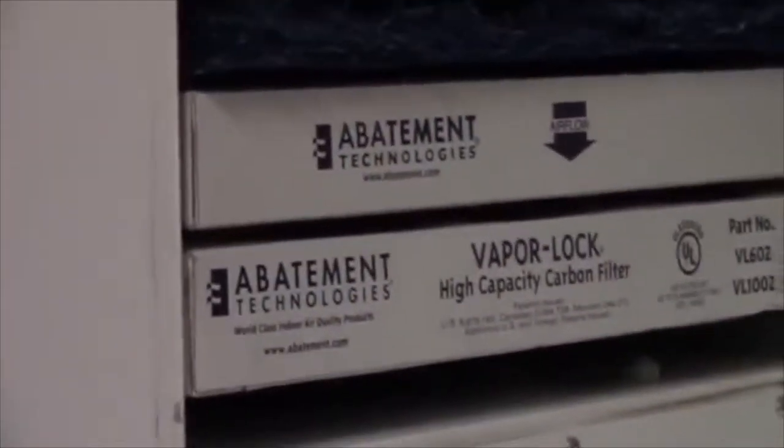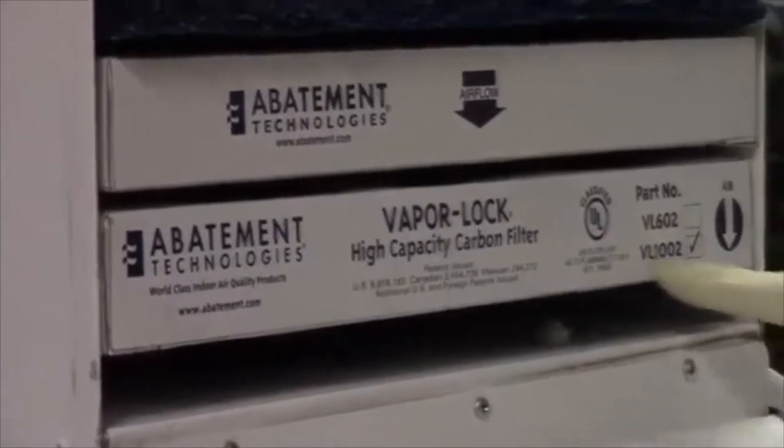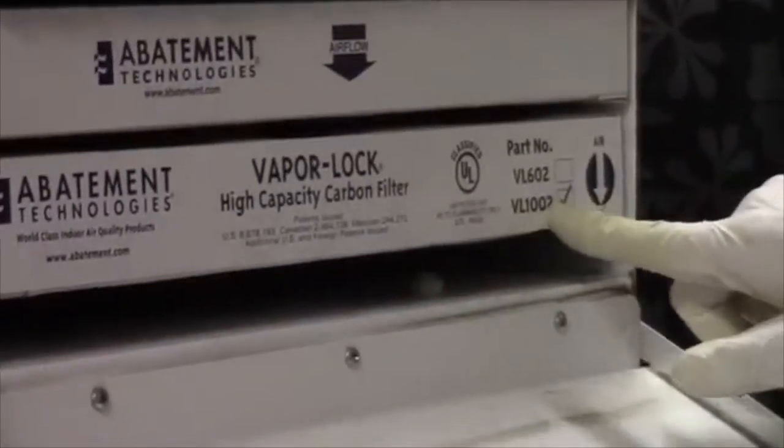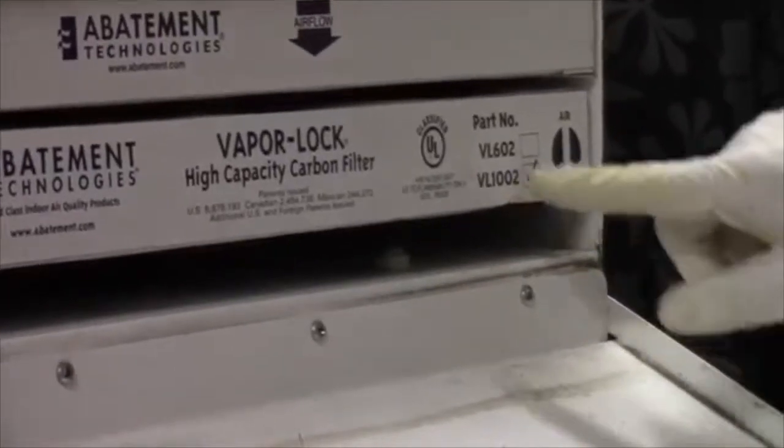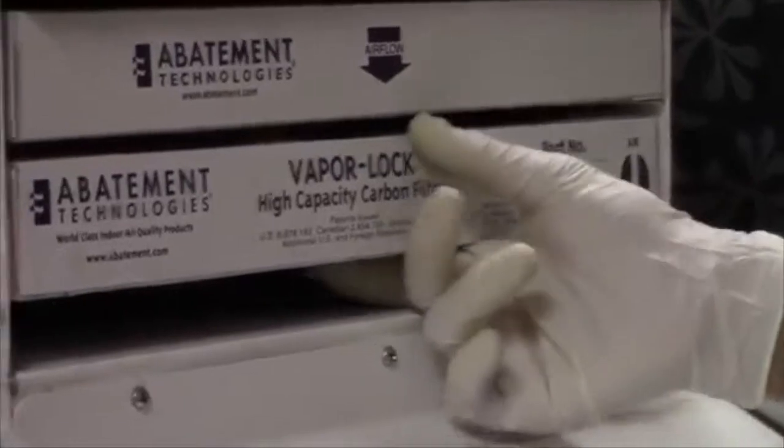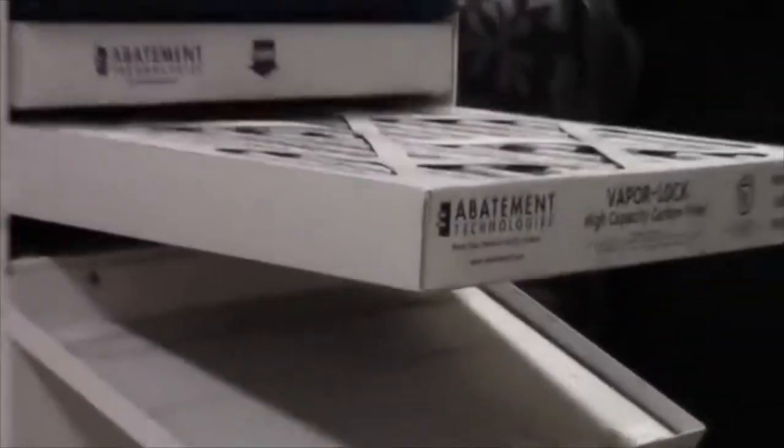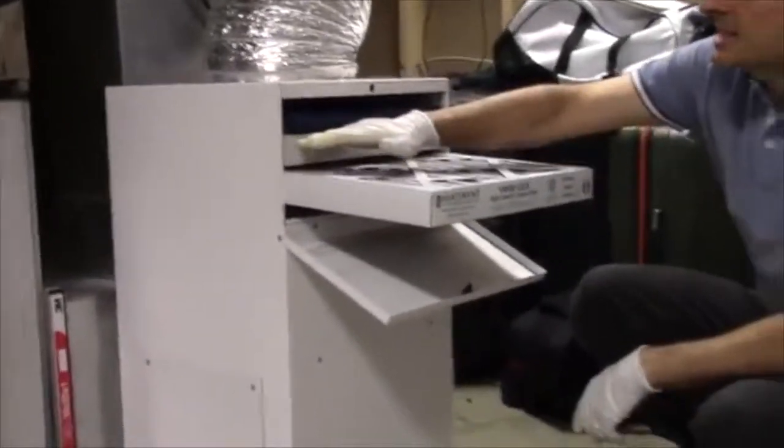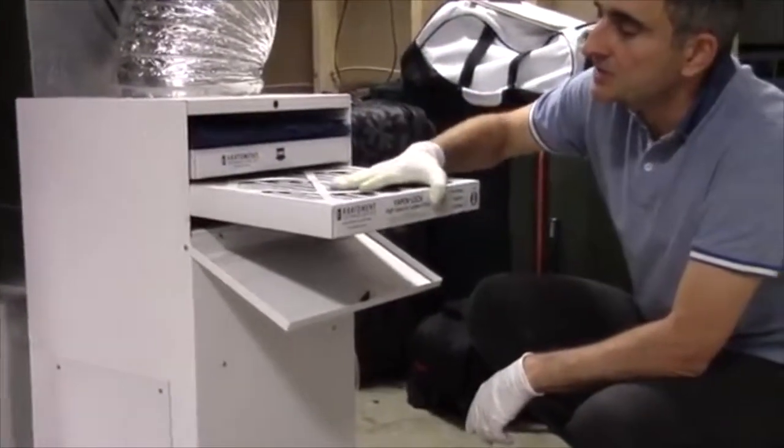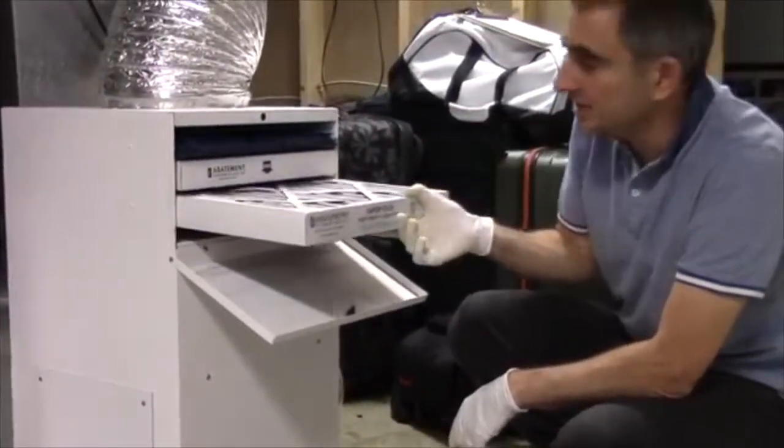In the case of the CAP 1200, the vapor lock filter, the 1002, is for the 1200 model. The VL602 is for the 600. In the 1200, this filter lasts one year. In the 600, it's in slot two and it lasts six months. Okay, so this filter has been in only for six months, so we're not going to change it today.